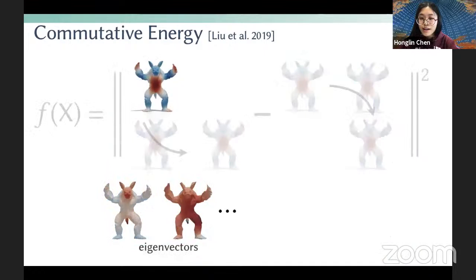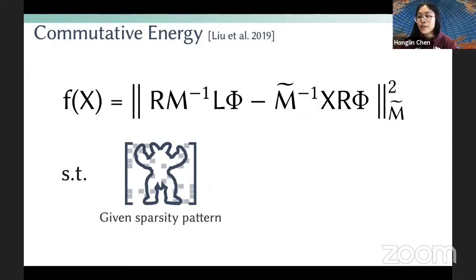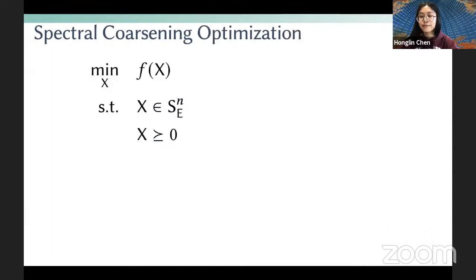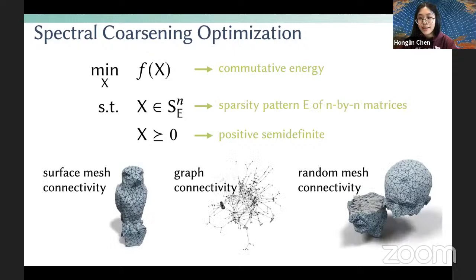When phi are the eigenfunctions, we can prove that minimizing the commutative energies also preserves the eigenvalues. Because discrete operators like the Laplacian have additional properties — the matrix needs to be sparse and symmetric positive semidefinite — we added those constraints. The optimization problem has the commutative energies as the energy function, with two constraints: the coarsening operator must be positive semidefinite, and it must have a specific sparsity pattern E. The sparsity pattern E can be any arbitrary pattern — it can encode surface or volumetric mesh connectivity, graph connectivity, or even random connectivity.